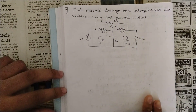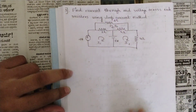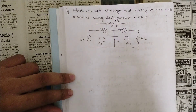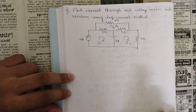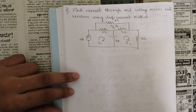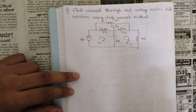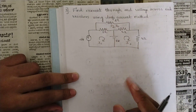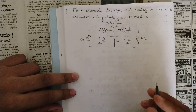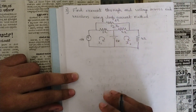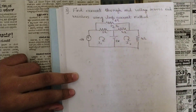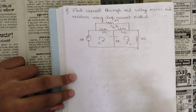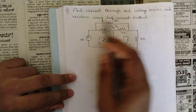Hello everyone, welcome to this new session. In our previous session we started with the concept of mesh analysis and solved two problems: one with two loop currents and another with three loop currents arranged in a straight line, which was easier to solve.